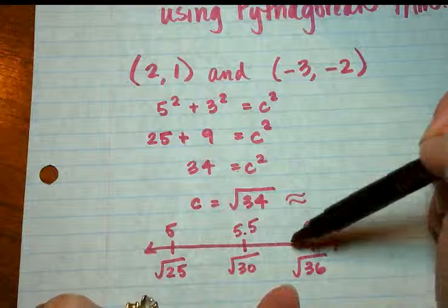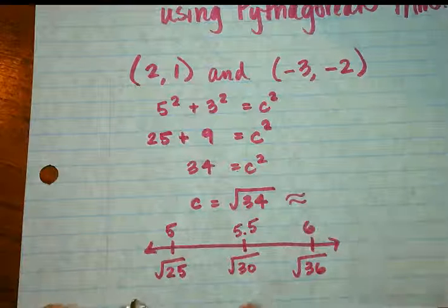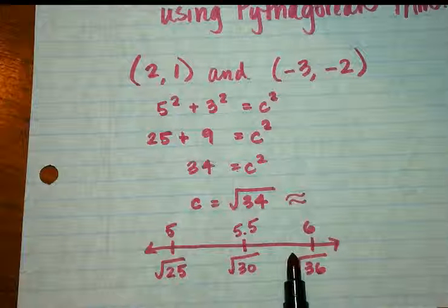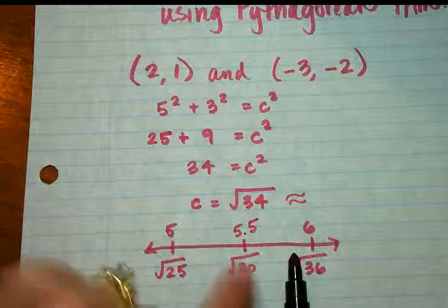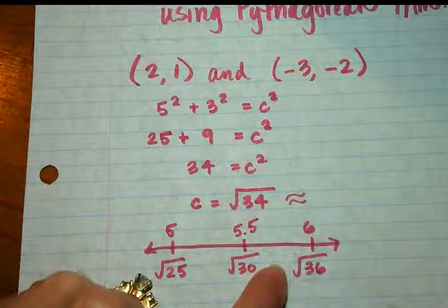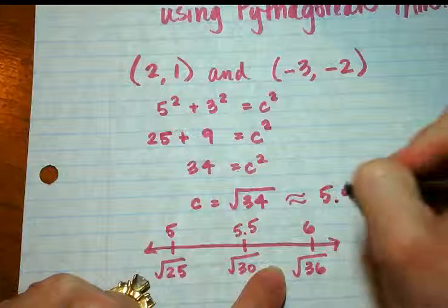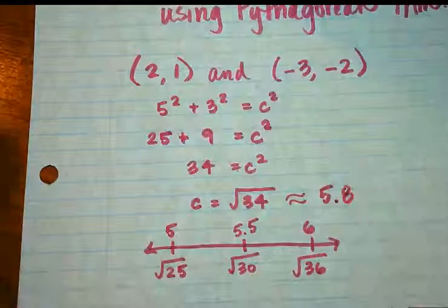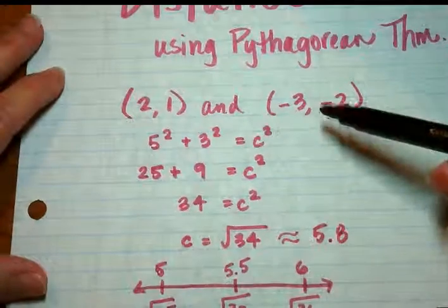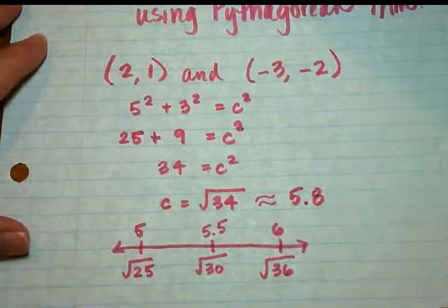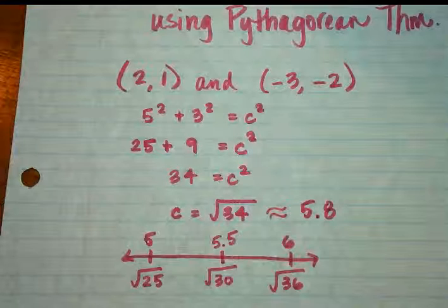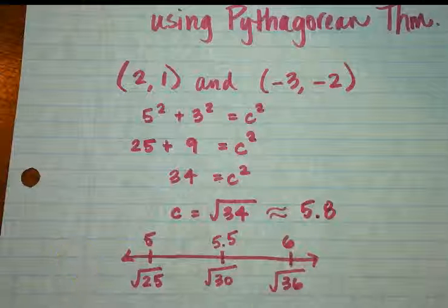It's going to be closer to 6 than it is to 5.5. So I'm going to say that it's about 5.8. So the distance between those two points is 5.8.